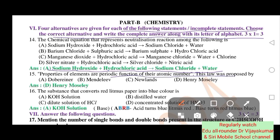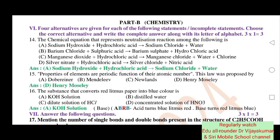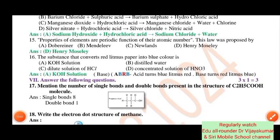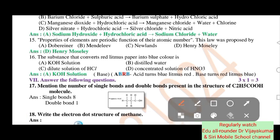This law was proposed by Henry Moseley. The substance that converts red litmus paper into blue colour is KOH solution. Acid turns blue litmus red. Base turns red litmus blue.